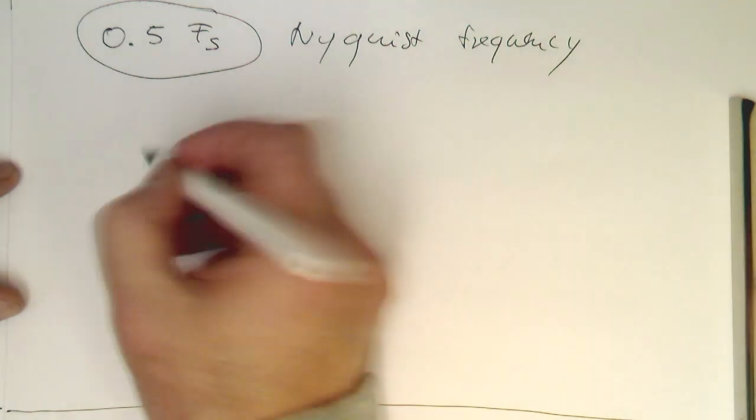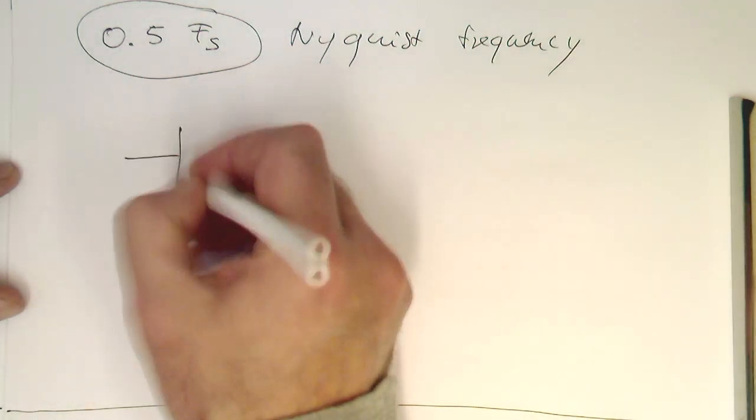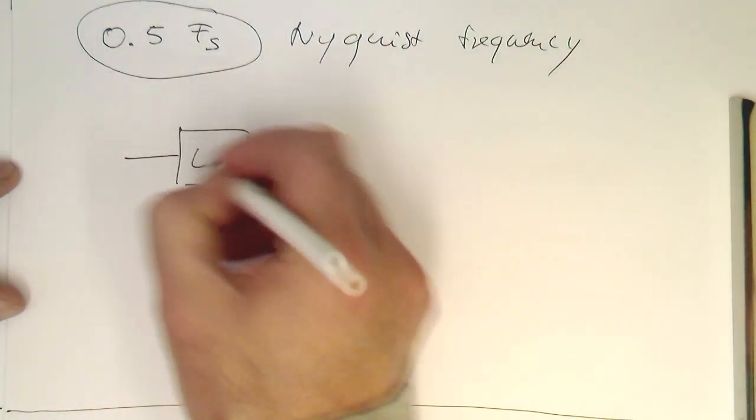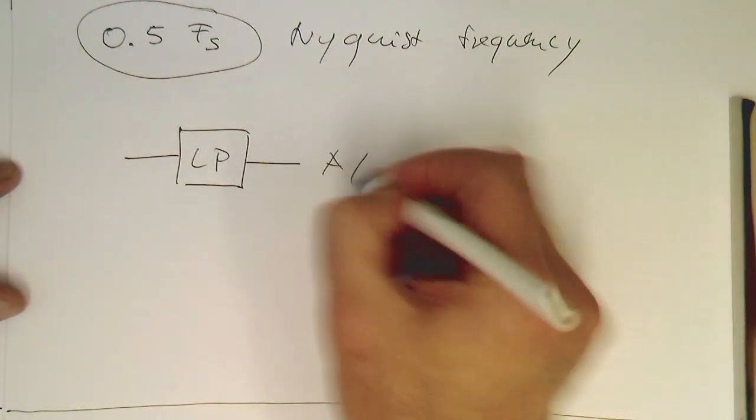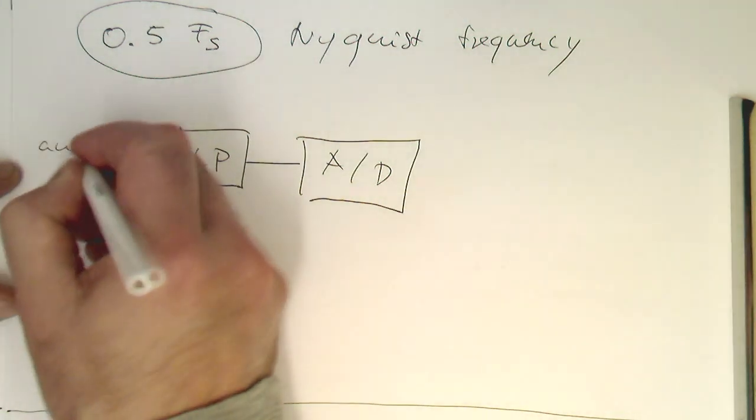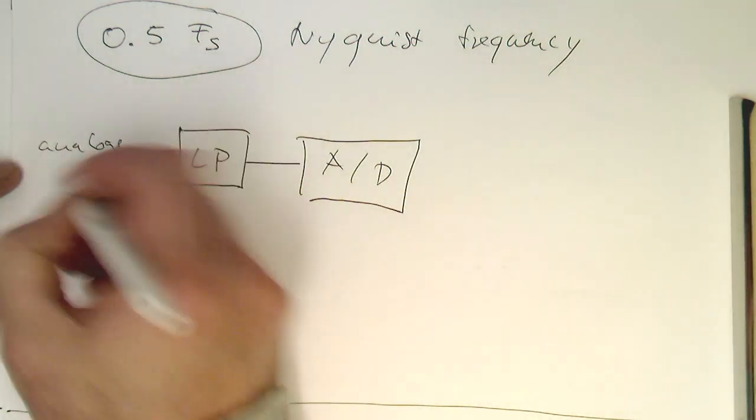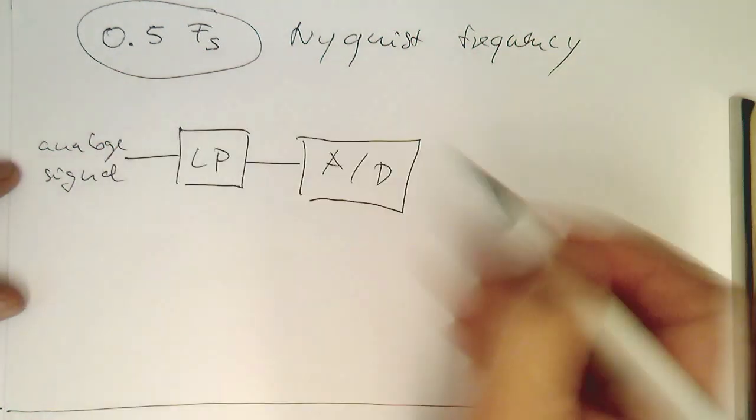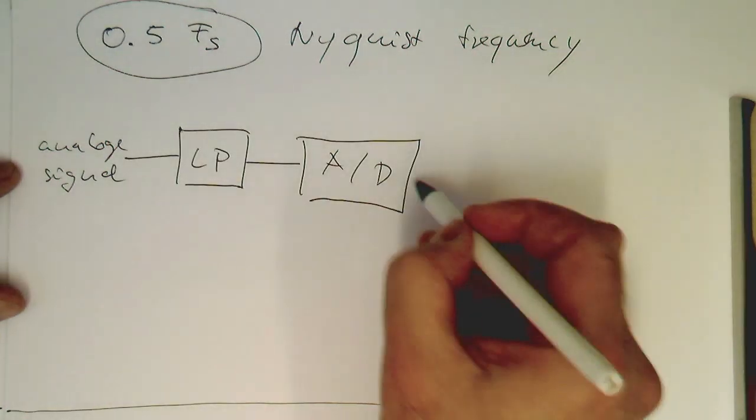So how do we do this? The simplest way, or probably the most intuitive way, is using a low pass filter in front of our AD converter. So that's our analog signal, low pass filter, AD converter.